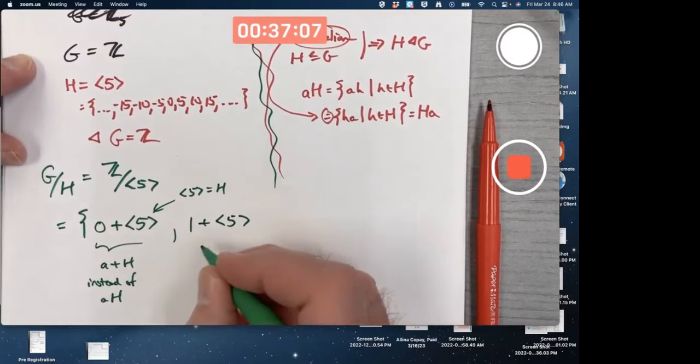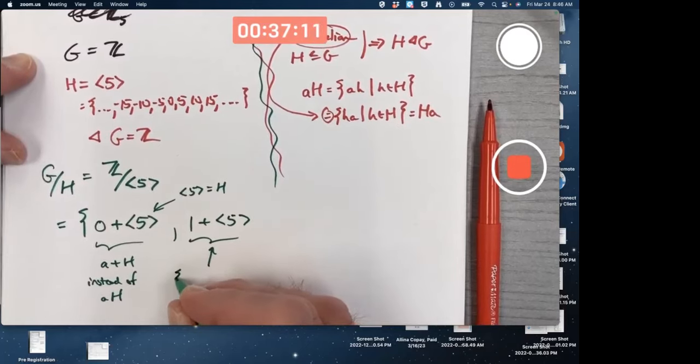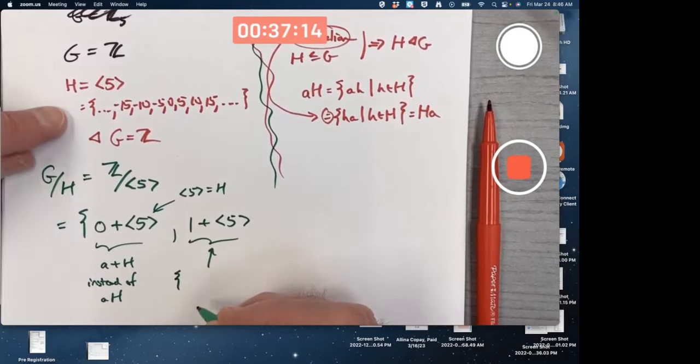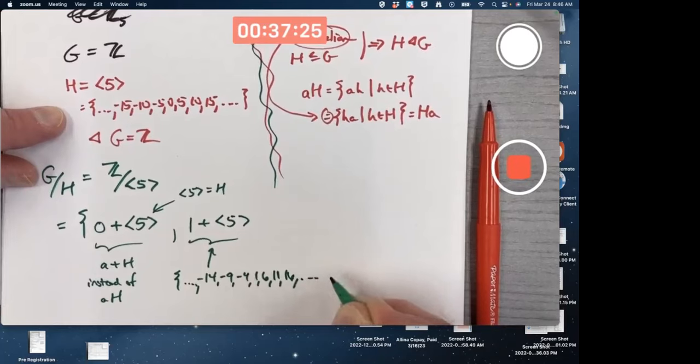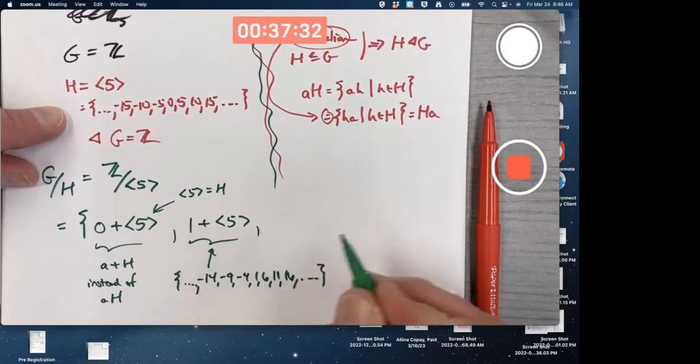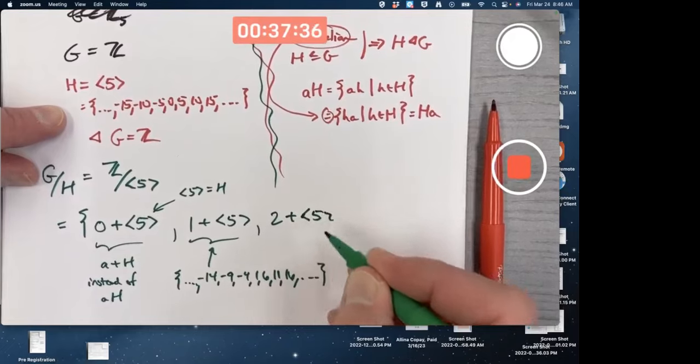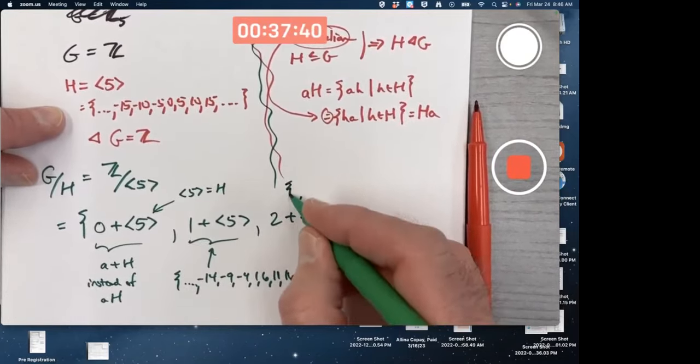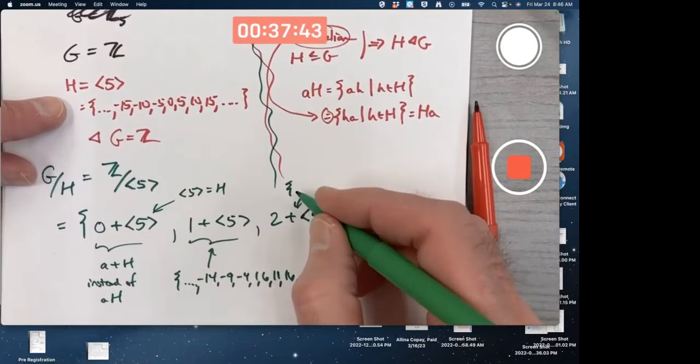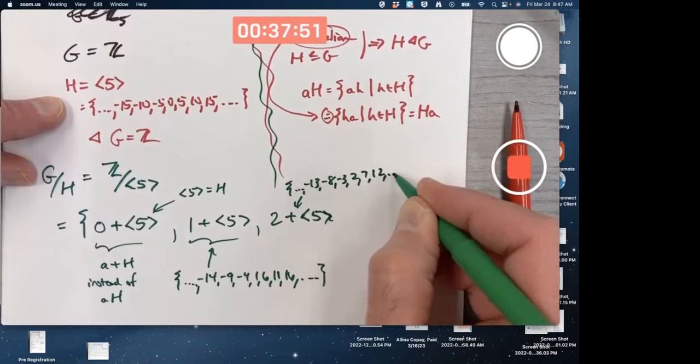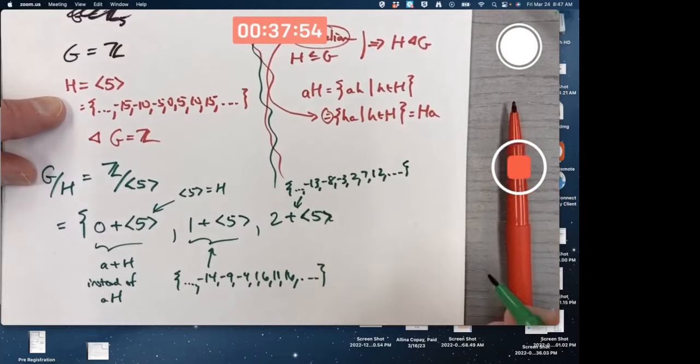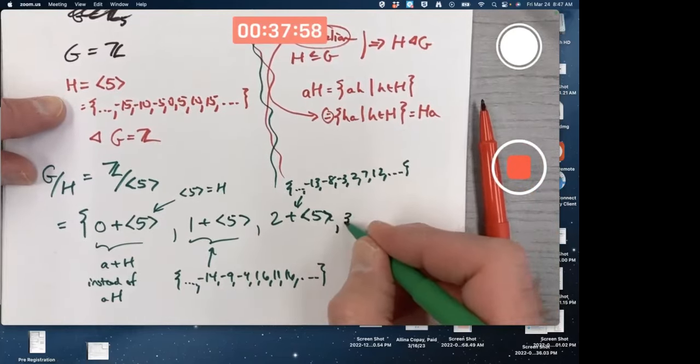One plus the subgroups is a different coset. What elements does this contain? Take the elements of H and add one to them. Negative 14, negative 9, negative 4, 1, 6, 11, 16, etc. It's an infinite set, but it's just one element of the factor group. Next one would be 2 plus the subgroup. What elements are in that coset? Take the elements of H and add 2 to them. Negative 13, negative 8, negative 3, 2, 7, 12, etc. 3 plus H. Take the elements of H and add 3 to them. Negative 12, negative 7, negative 2, 3, 8, 13, etc.